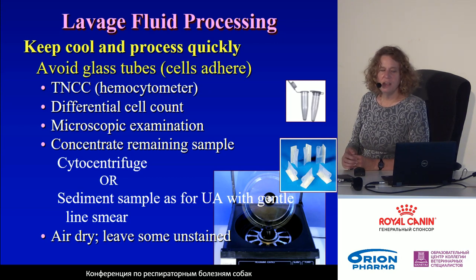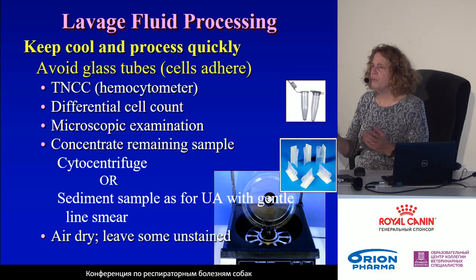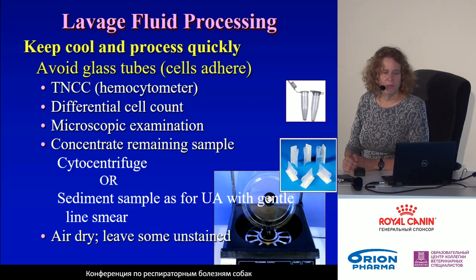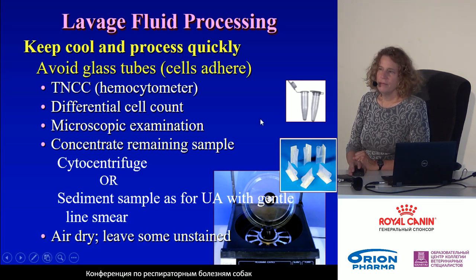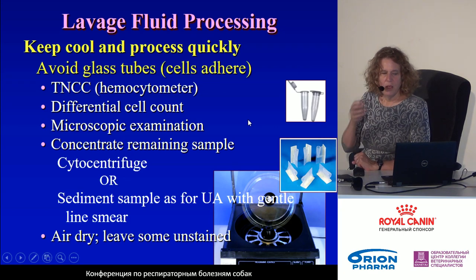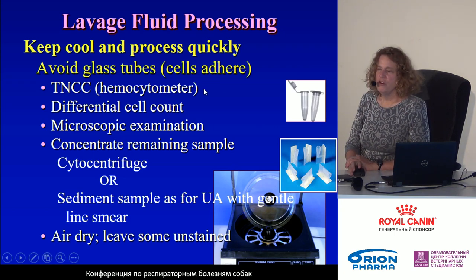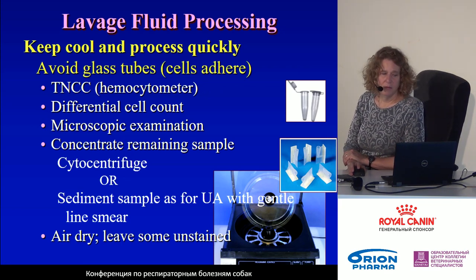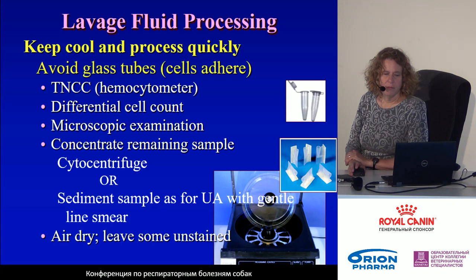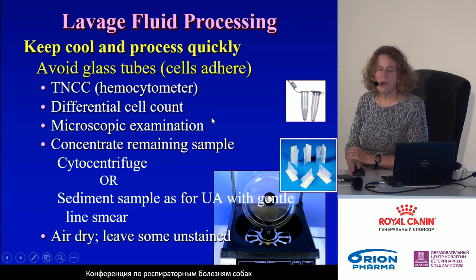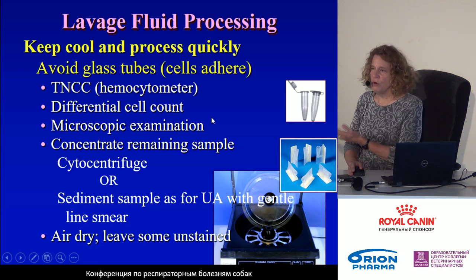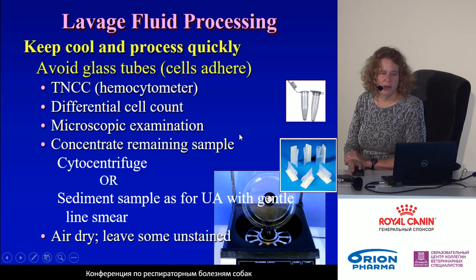Ideally, part of the sample is collected in plastic tubes instead of glass, because some of the cells may adhere to glass. It's not a huge difference, but it's best if possible. You can use your hemocytometer to determine a total nucleated cell count from the liquid. You can also perform differential cell counts and microscopic examination in your hospital, or send it out to another lab.